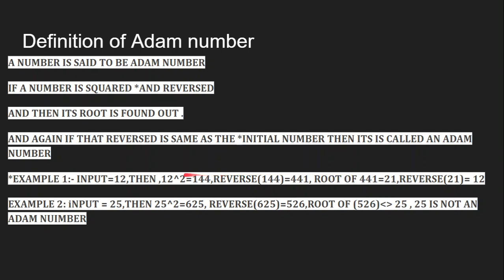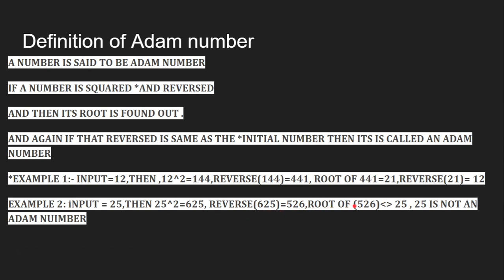Let us take one more example which is not an Adam number. Take the input number 25. 25 squared is 625. Reverse the number — the reverse number is 526. The square root of 526 is not equal to 25; it is some other number. So this is not an Adam number.